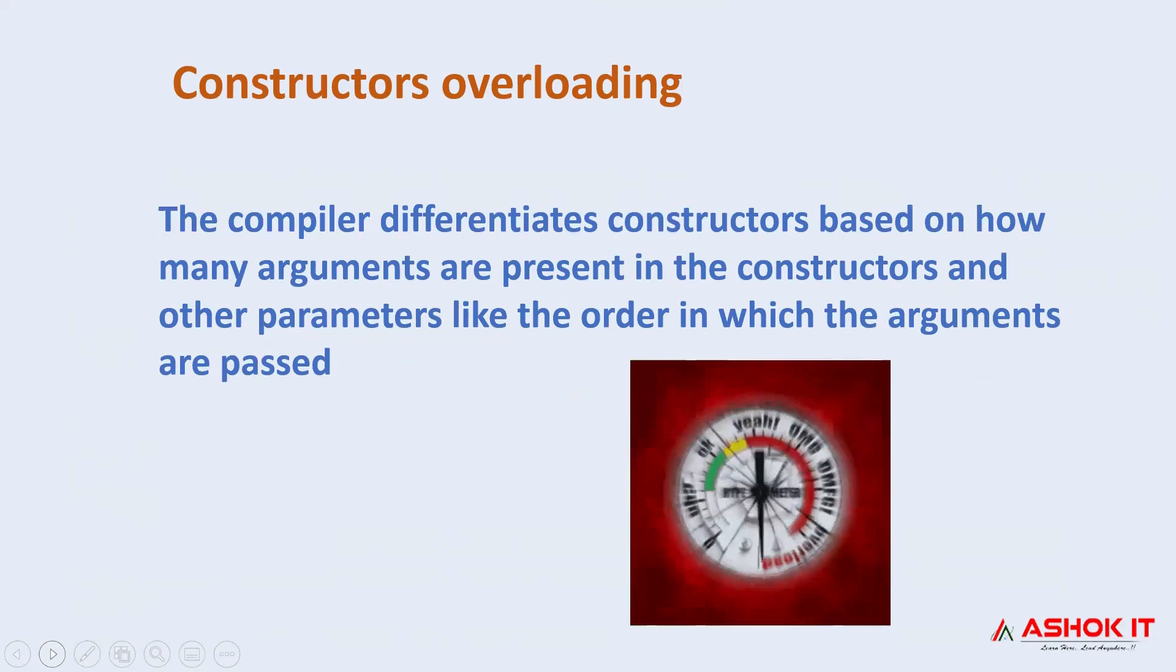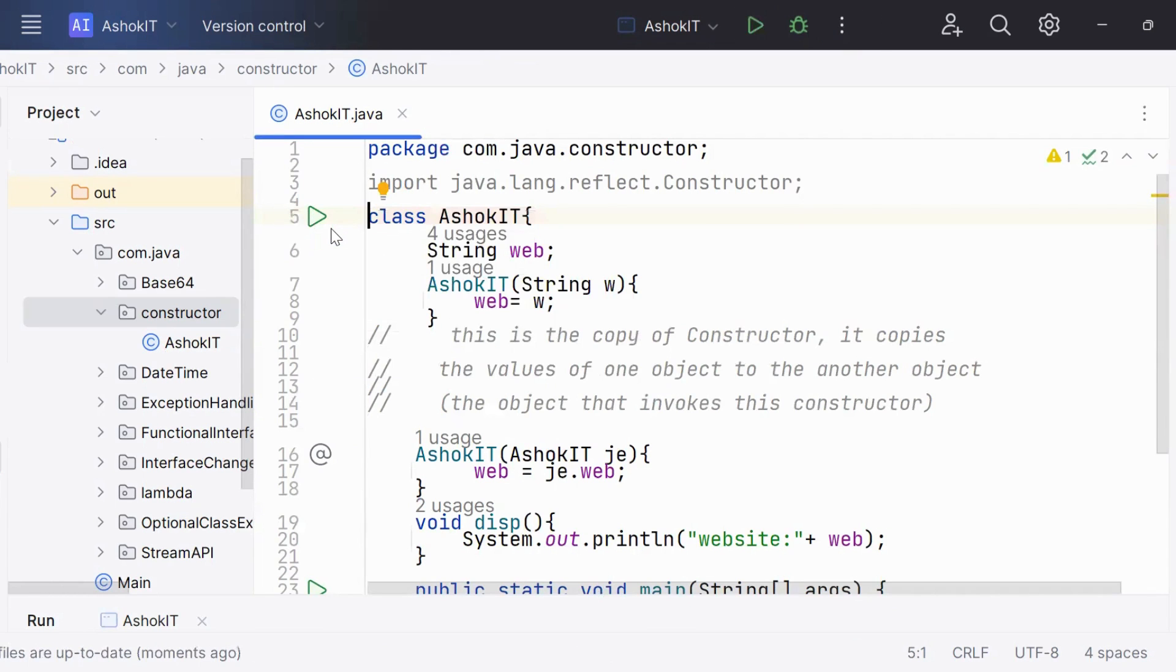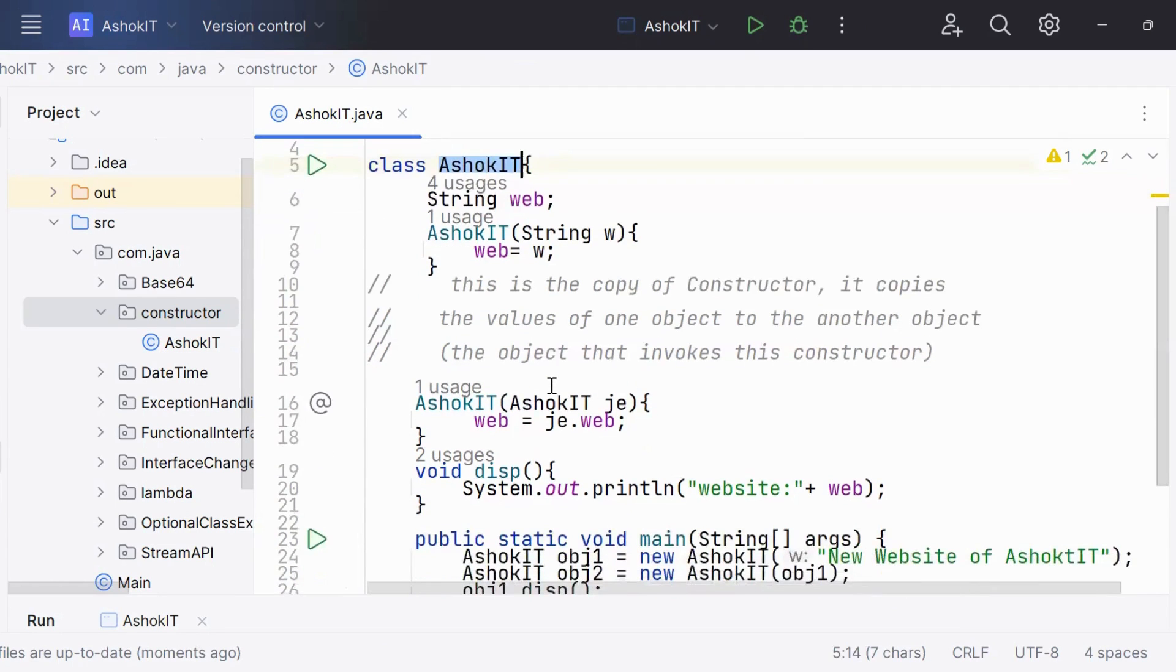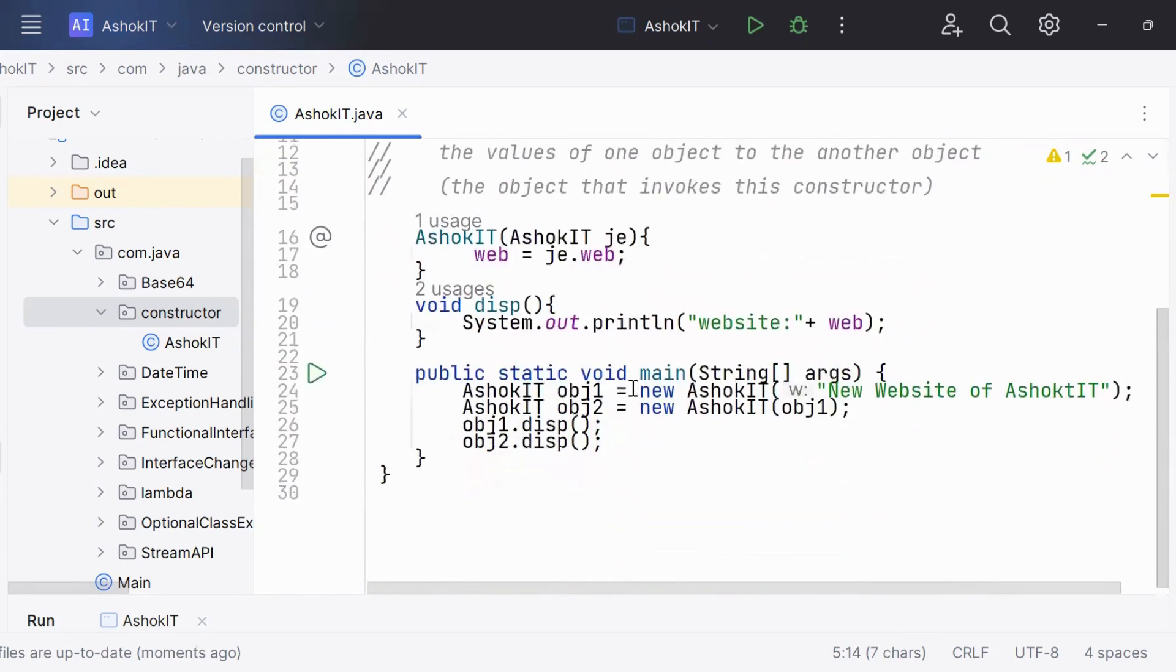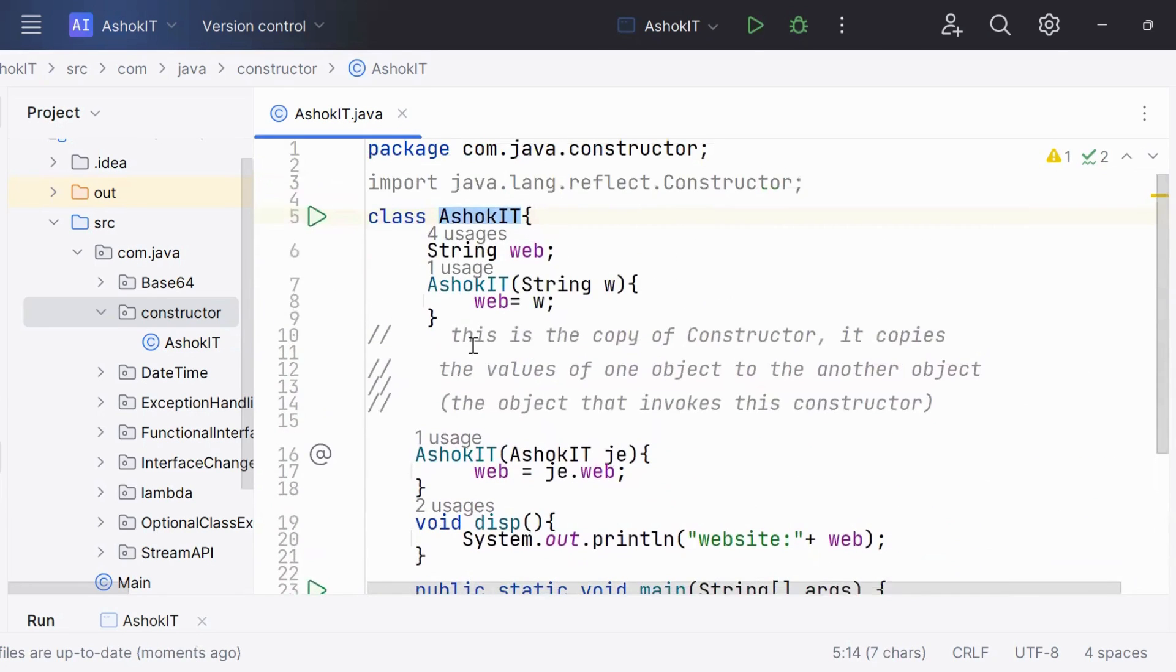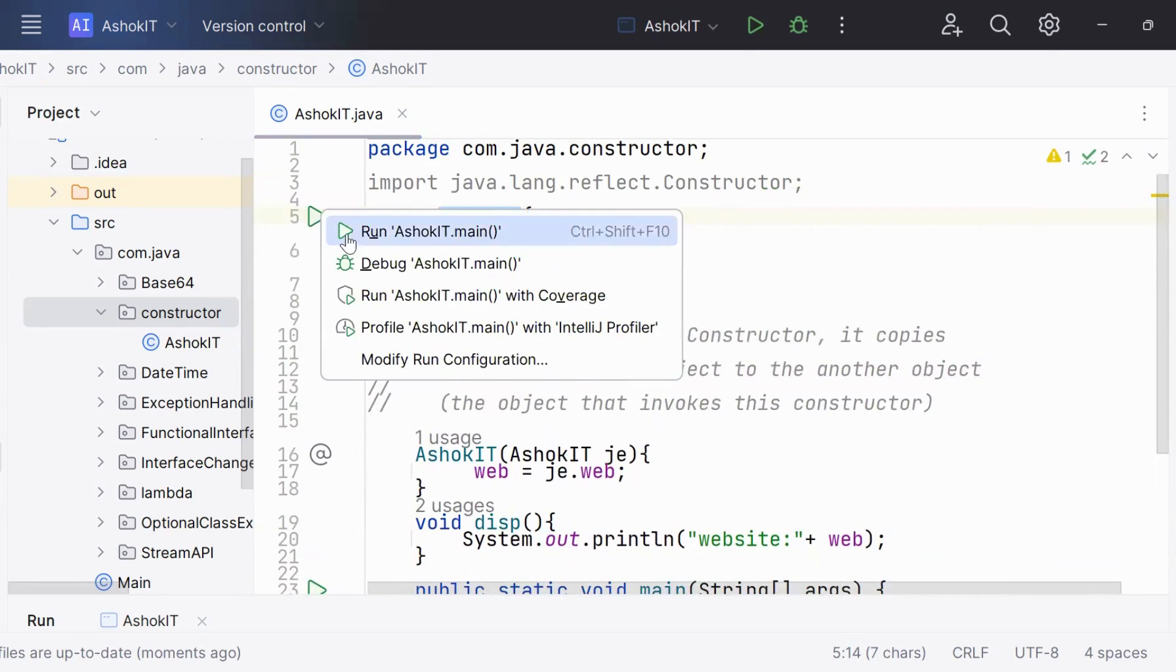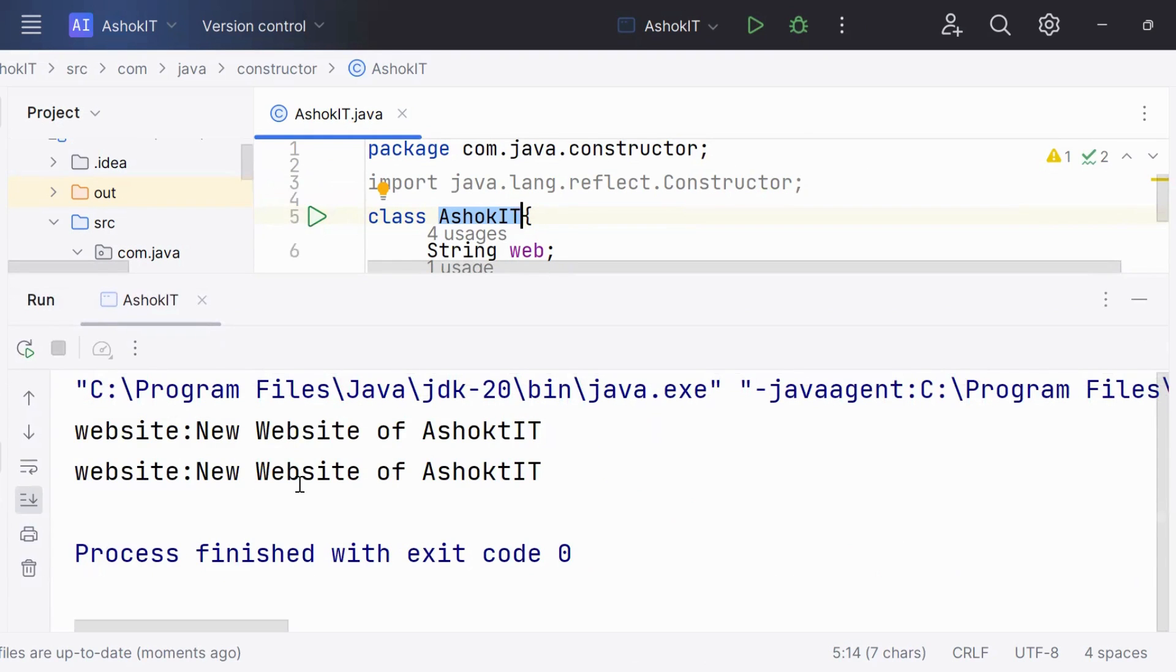Now let's understand constructor overloading. Constructor overloading is like method overloading. Constructors can be overloaded to create objects in different ways. The compiler differentiates the constructors based on how many arguments are present in the constructor and other parameters like the order in which arguments are passed. We can execute a basic example based on constructor overloading. This particular class has a constructor that copies the value from one object to another and invokes the object to this constructor.